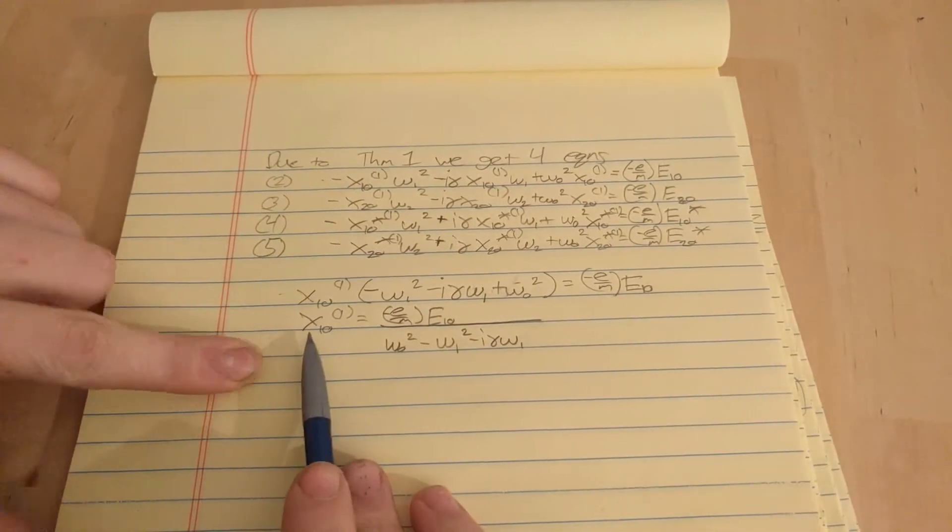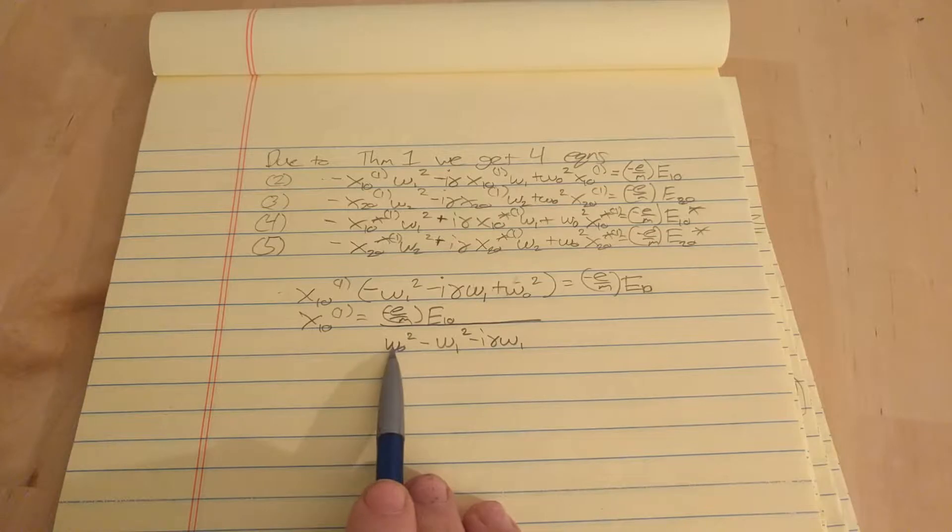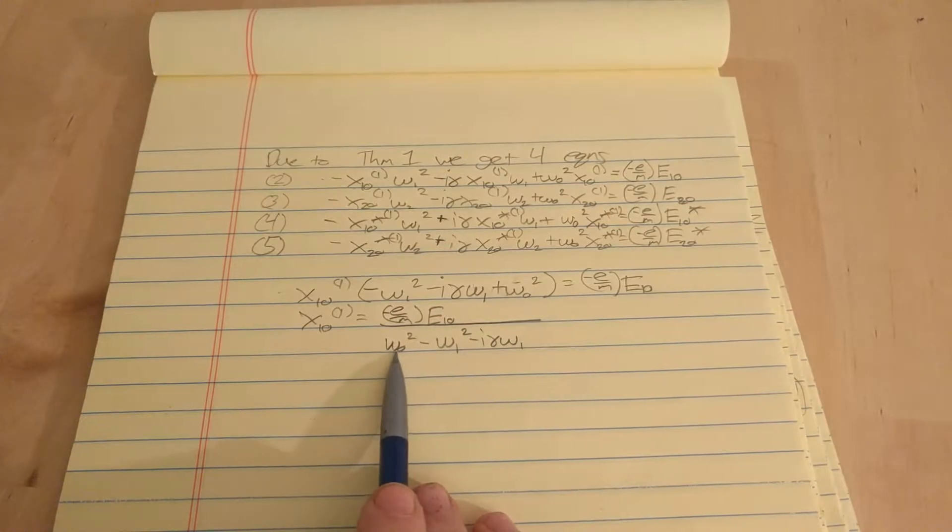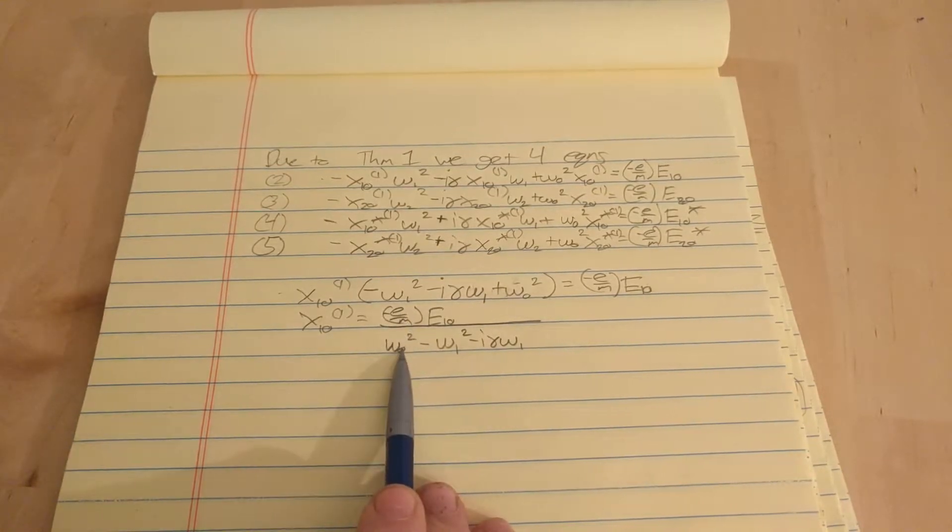Okay, so that's what we get for x1-naught. Sorry, I got my signs confused, because I knew it was supposed to, this term right here is responsible for resonance, and I knew it had to work out that this omega-naught had to be minus this other omega, but that's the way it should look.